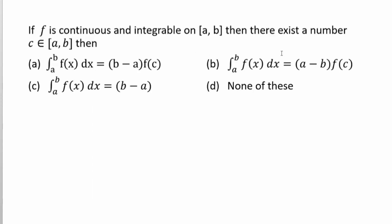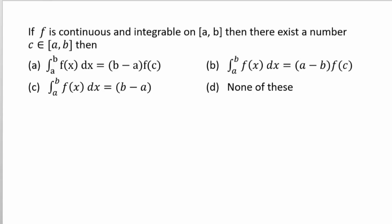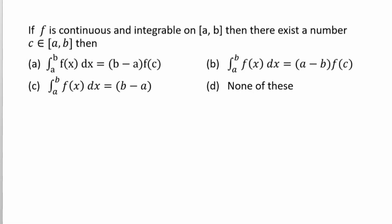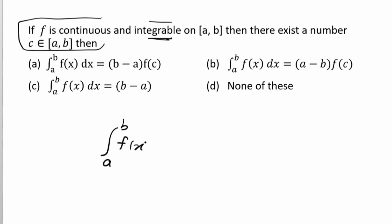If f is continuous and integrable on the closed interval [a, b], then there exists a number c belonging to [a, b] such that ∫_a^b f(x)dx equals (b - a) times f(c). This is the Mean Value Theorem for integrals, and option E is the correct answer.